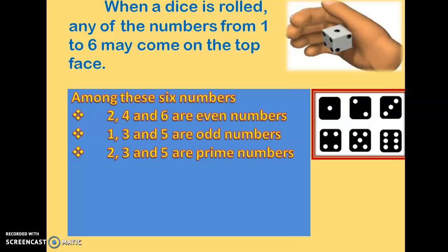The prime numbers on a die are 2, 3, and 5. A prime number is a number divisible only by 1 and itself, so it has exactly 2 factors. Among the remaining three numbers, there are 2 composite numbers which are 4 and 6, and number 1 is left over — which is neither prime nor composite because 1 has only 1 factor. A prime has exactly 2 factors, a composite has more than 2, so 1 fits neither category.